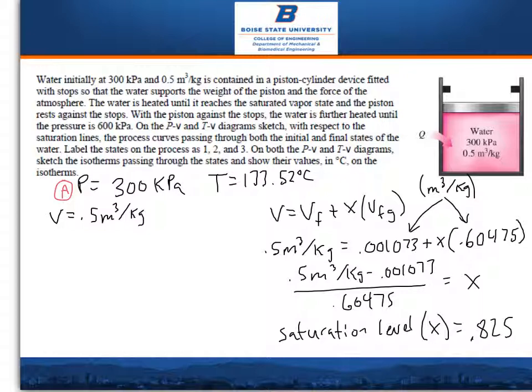So then what you do is subtract the 0.001073 from the 0.5 and then divide it by the 0.60475 to get the saturation level, which is 0.825.